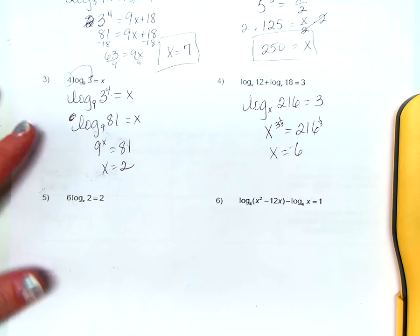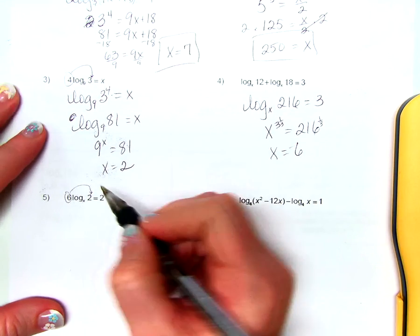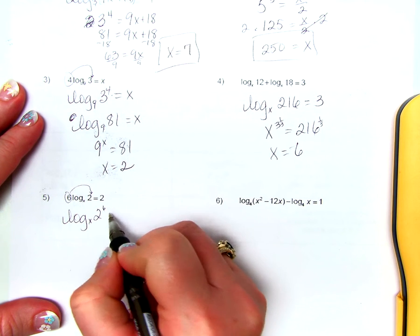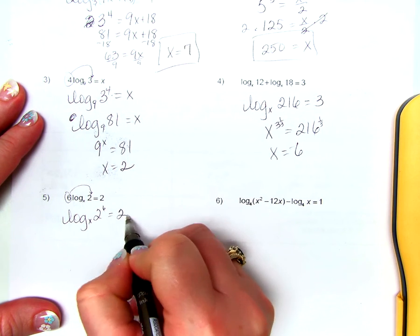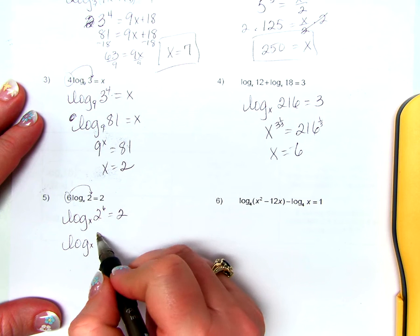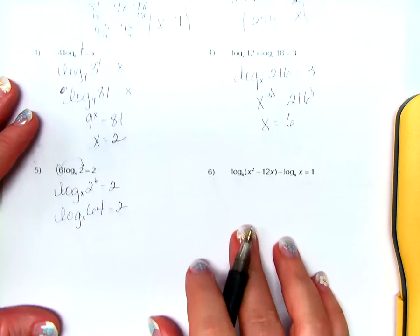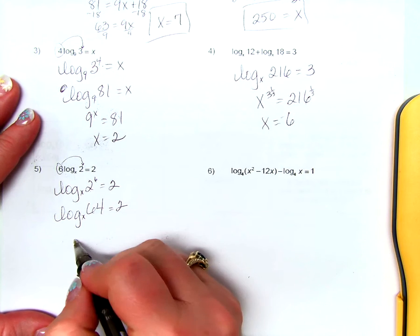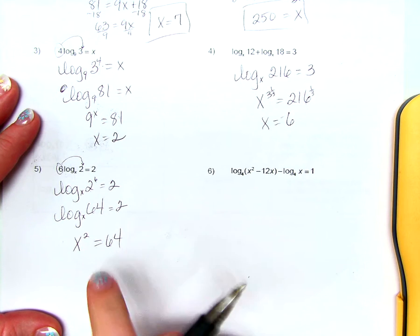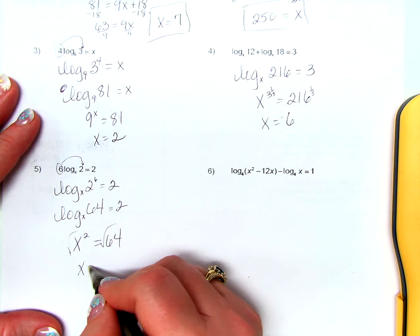Problem 5: the 6 becomes an exponent on 2, giving log base x of 2 to the 6th power equals 2. Since 2 to the 6th is 64, rewriting in exponential form gives x squared equals 64. Taking the square root of both sides gives x equals 8.